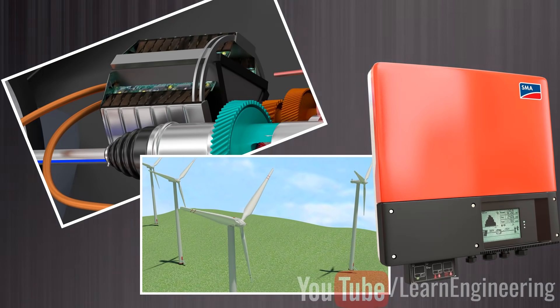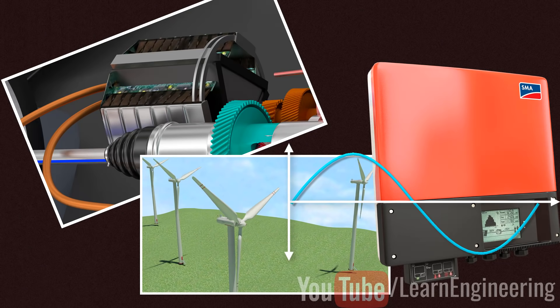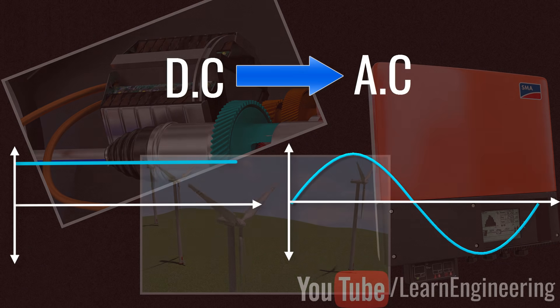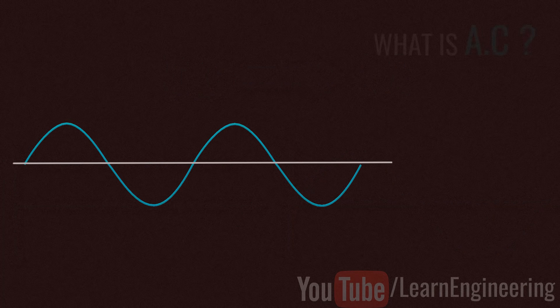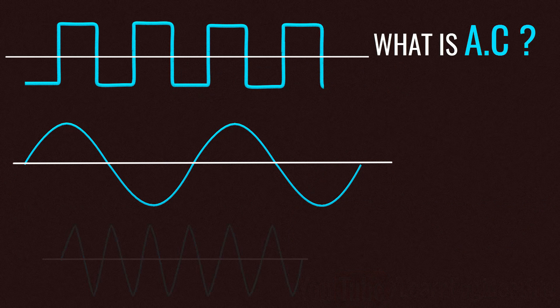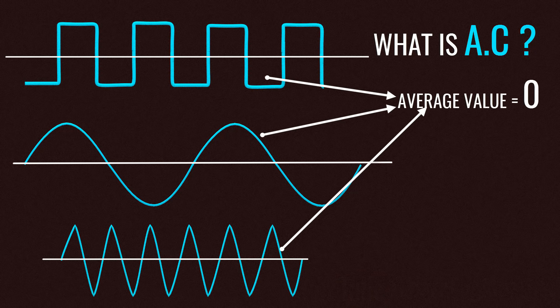This video will explain how to get a pure sinusoidal electric power output from DC power input in a step-by-step, logical manner. An alternating current periodically reverses its direction. For this reason, the average value of an alternating current over a cycle will be zero.